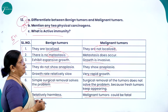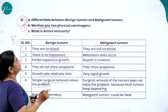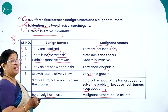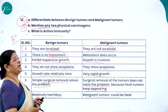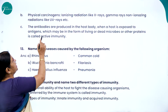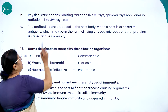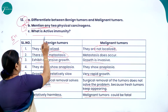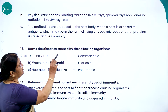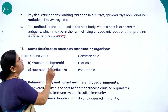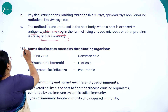Mention any two physical carcinogens. Cancer causing agents are called carcinogens. Physical carcinogens include ionizing radiations like X-rays and gamma rays, and non-ionizing radiations like UV rays. What is active immunity? When a host is exposed to antigens — which may be in the form of living or dead microbes or other proteins — the antibodies produced in the host body confer what is called active immunity.